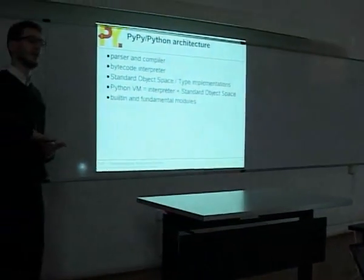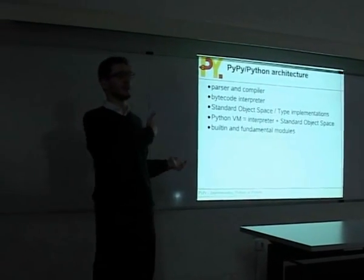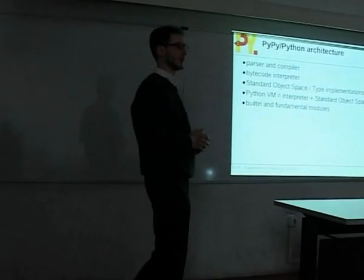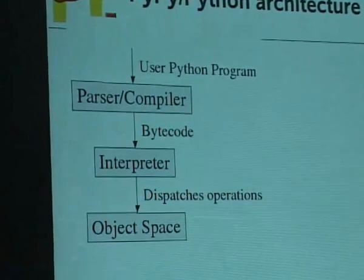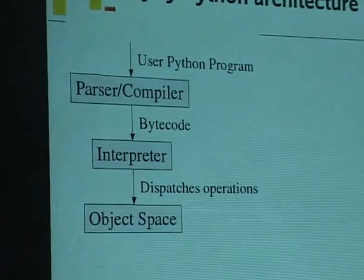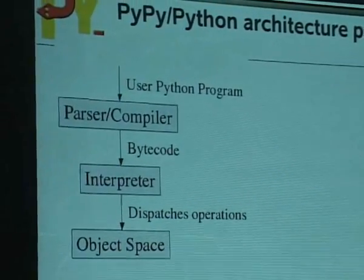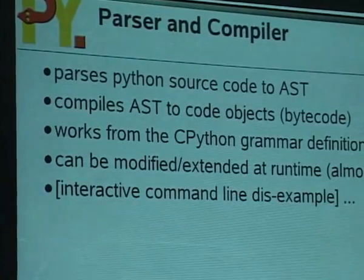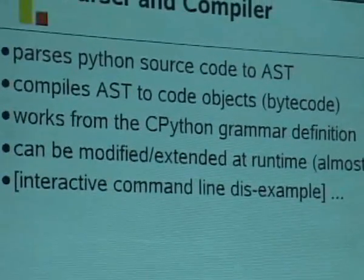To have something that actually works and can use the Python standard library, we also need built-in modules. In CPython these are written in C; in PyPy they are written in Python. In the architecture, the user program is compiled by the parser and compiler into bytecode, which goes through the interpreter loop. Each time the interpreter needs to do something with values at runtime, it doesn't contain code to do it itself but dispatches and delegates the operation to the object space.